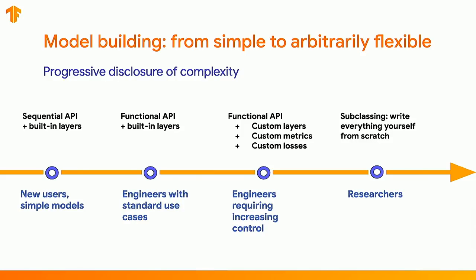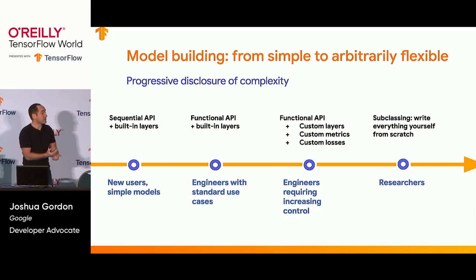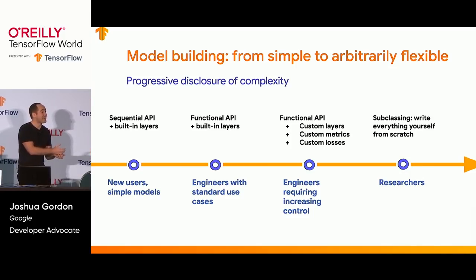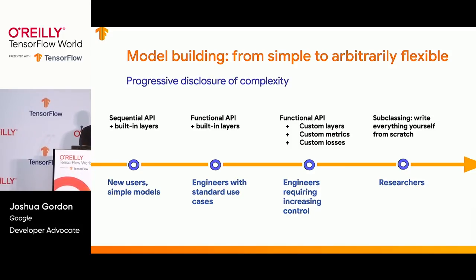If you're a total novice to deep learning, you can start with the sequential API, which is by far the easiest and clearest way to develop deep learning models today. You can build a stack of layers, call things like compile and fit, and that is 100% valid TensorFlow 2 code — just as fast as any other way. As you need more control, you can optionally scale up using the functional API or go all the way to subclassing, all in the same framework.